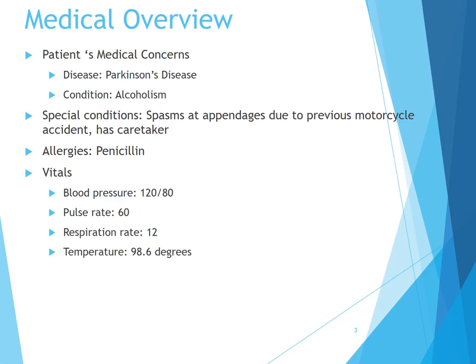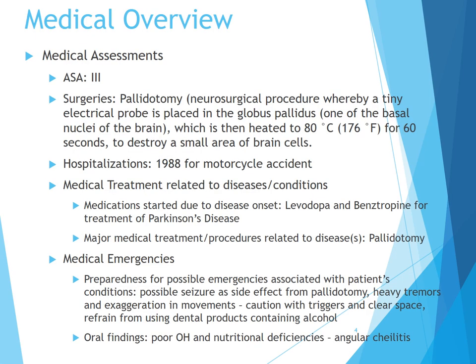His allergies are penicillin, and his vitals are usually 120 over 80, with a pulse rate of 60, a respiration rate of 12, and a temperature of 98.6 degrees. His classification is an ASA type 3.